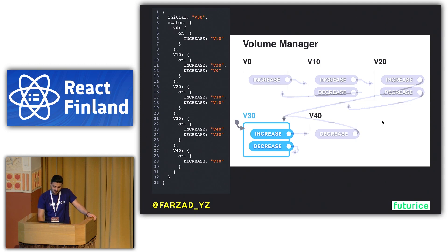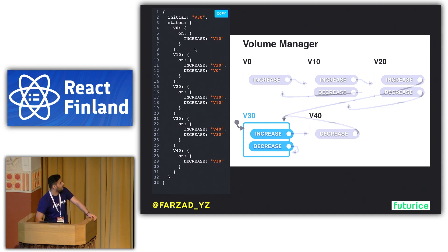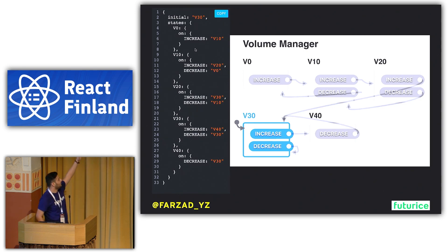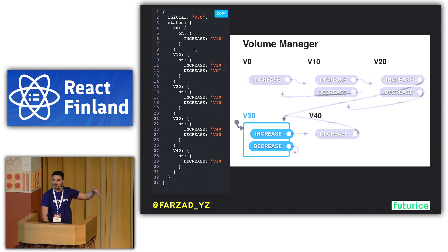Getting back to the video player example — just looking at the volume manager, changing the volume — you could define a JSON representation of how the volume behavior works. This isn't the most optimal implementation since you could use extended state or context, but it demonstrates explicit behavior modeling in JSON. The volume manager starts from an initial volume and can be changed by decrease and increase events, bounded between minimum and maximum values.